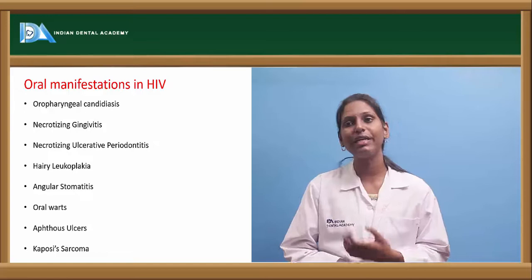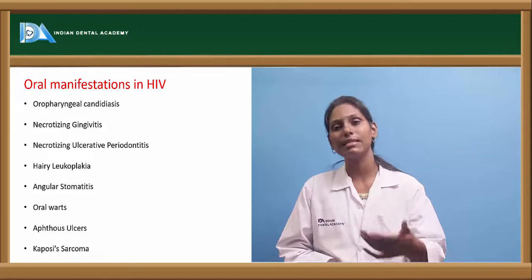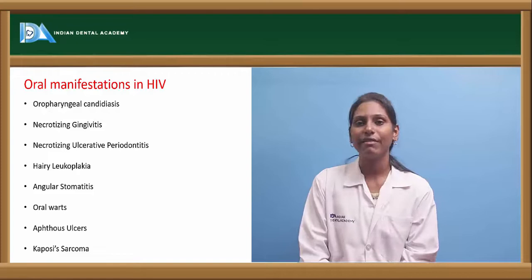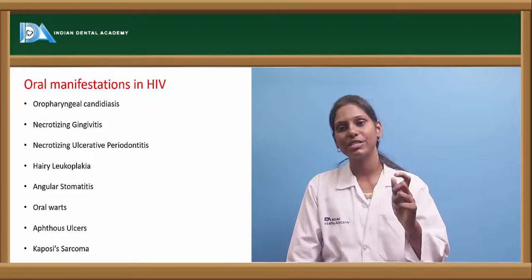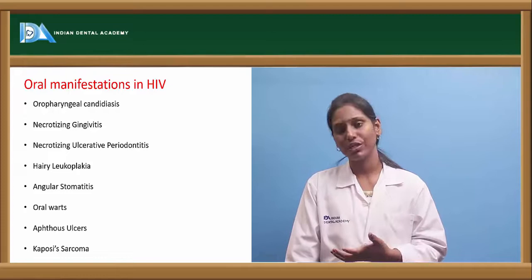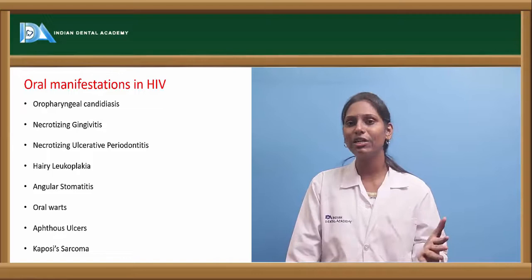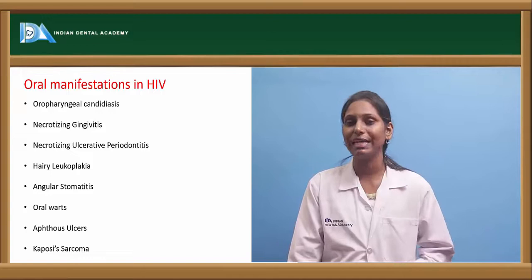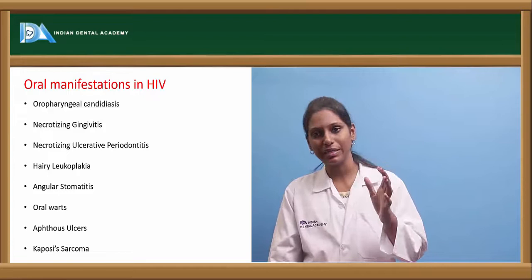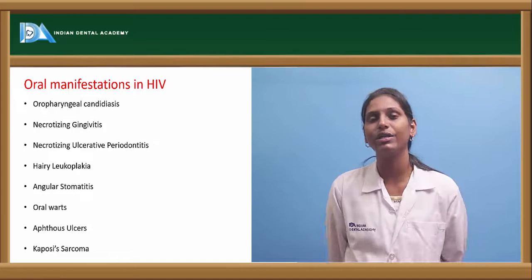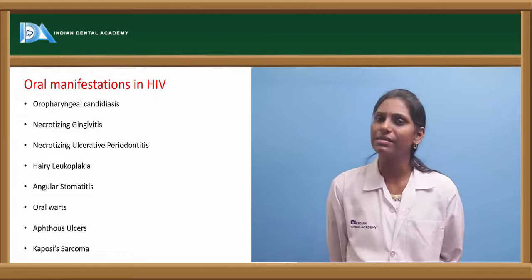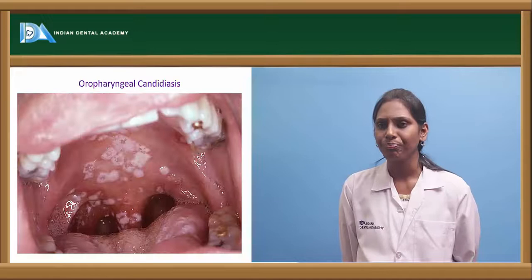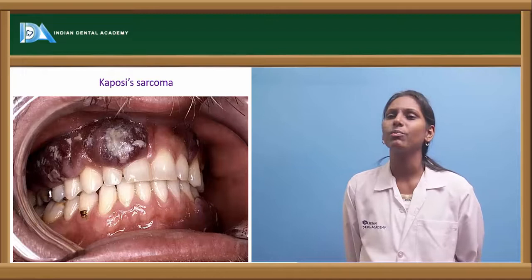Coming to oral manifestations of HIV: oropharyngeal candidiasis can itself be the first manifestation of HIV. Necrotizing gingivitis and necrotizing ulcerative periodontitis can be seen, with crater-like punch-out lesions on the gingiva, halitosis, gingival erythema, and loosening of teeth. Hairy leukoplakia — especially on the lateral border of the tongue with a slightly wrinkled appearance — is a common oral manifestation. Angular stomatitis, oral warts, aphthous ulcers, and Kaposi sarcoma involving the gingiva or palate can also be seen.